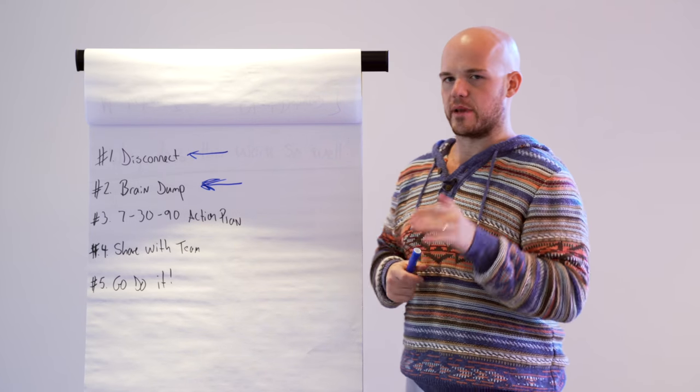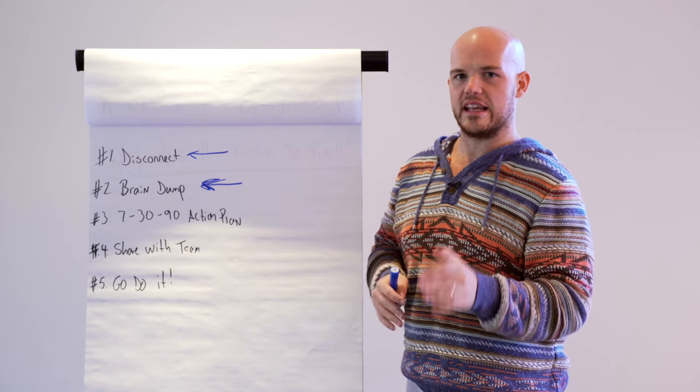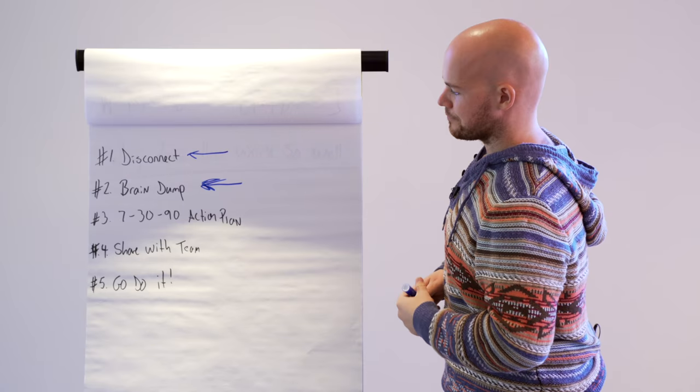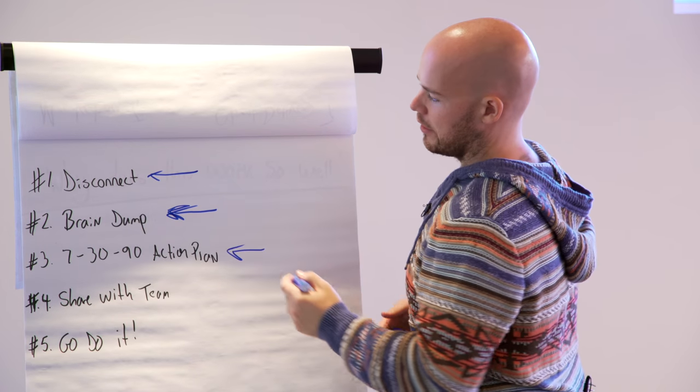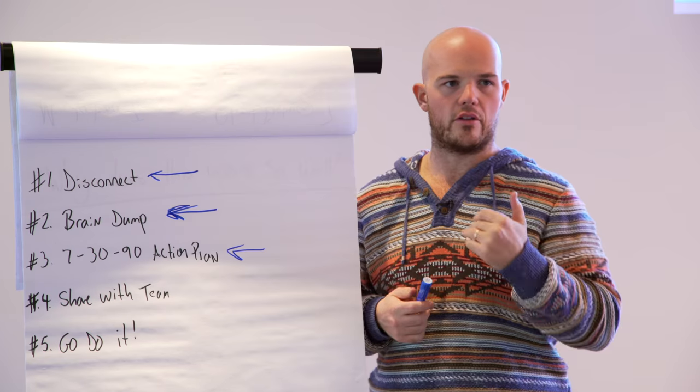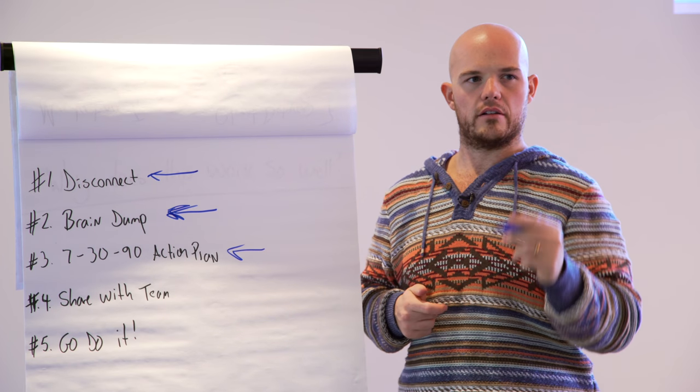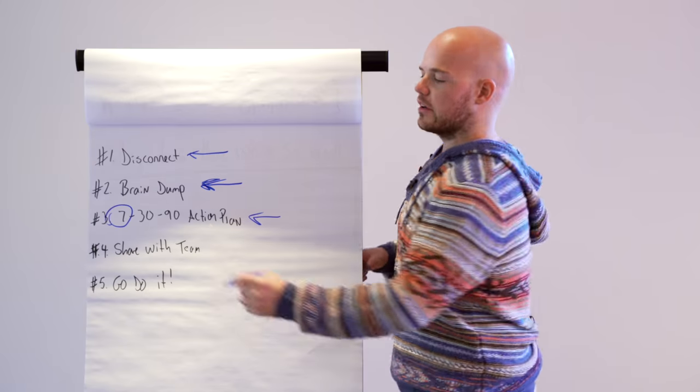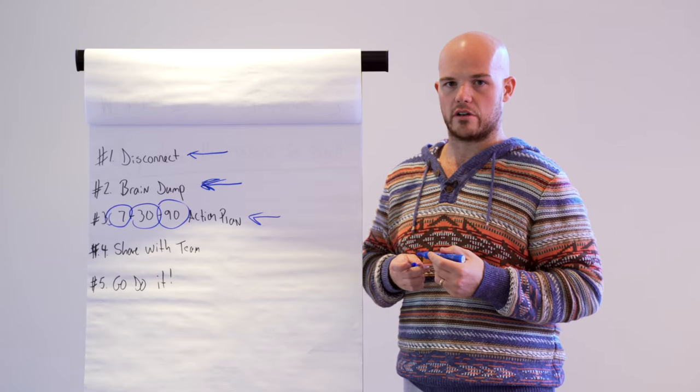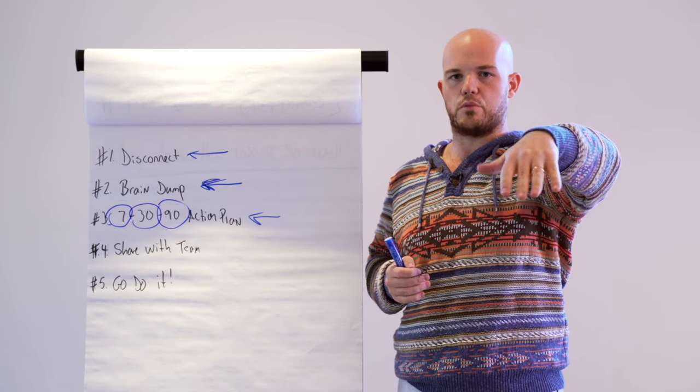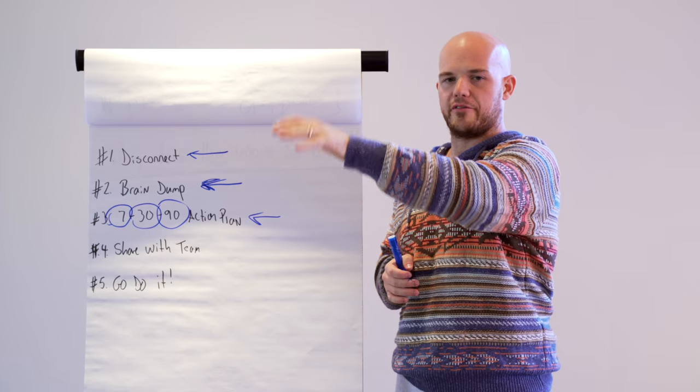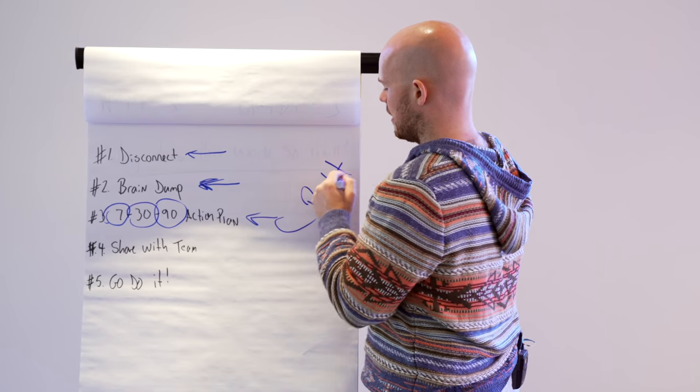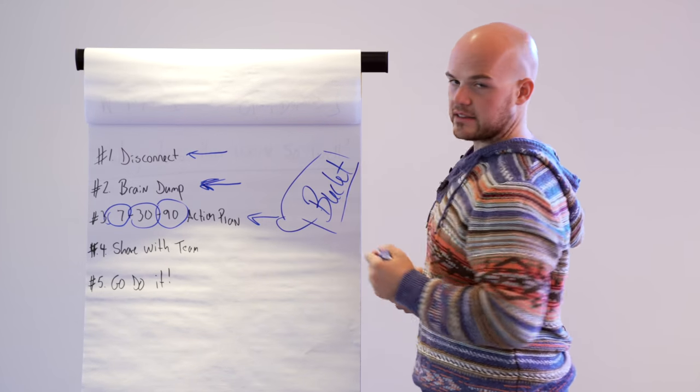The reason most entrepreneurs make terrible decisions is because they do not have the information they need, or they're not listening to the feedback of that information. Next thing I want you to do: map out, put every single thing under that category, and start circling. Maybe a different color. I want you to create a seven-day plan, a 30-day plan, and a 90-day plan. You're gonna create a scenario where here's what I'm gonna fix in the next week, here's what I'm gonna fix in the next month, here's what I'm gonna fix in the next 90 days.